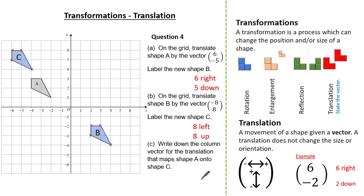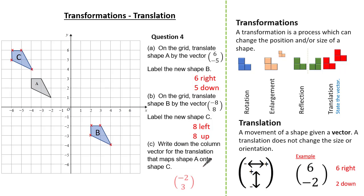Finally, the last question wants us to identify the column vector for the translation that maps shape A to shape C. The number on the top is left or right and the number on the bottom is up or down. Choosing a vertex and counting carefully, we go 2 to the left and 3 up. Checking with another vertex gives the same result: 2 to the left and 3 up. Therefore the vector which translates shape A onto shape C is minus 2, 3, meaning 2 to the left and 3 up.